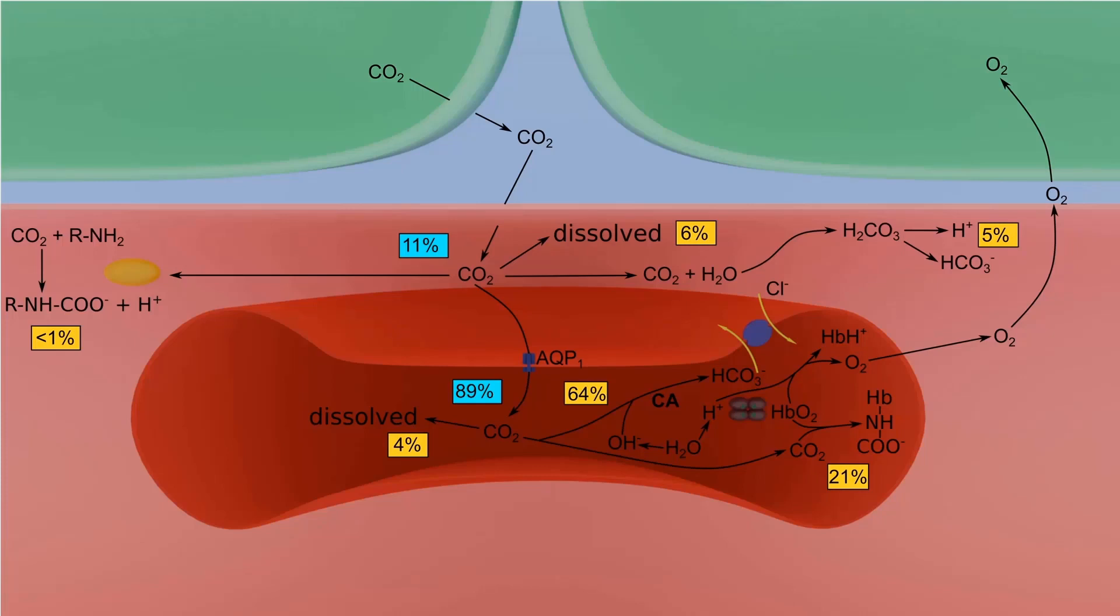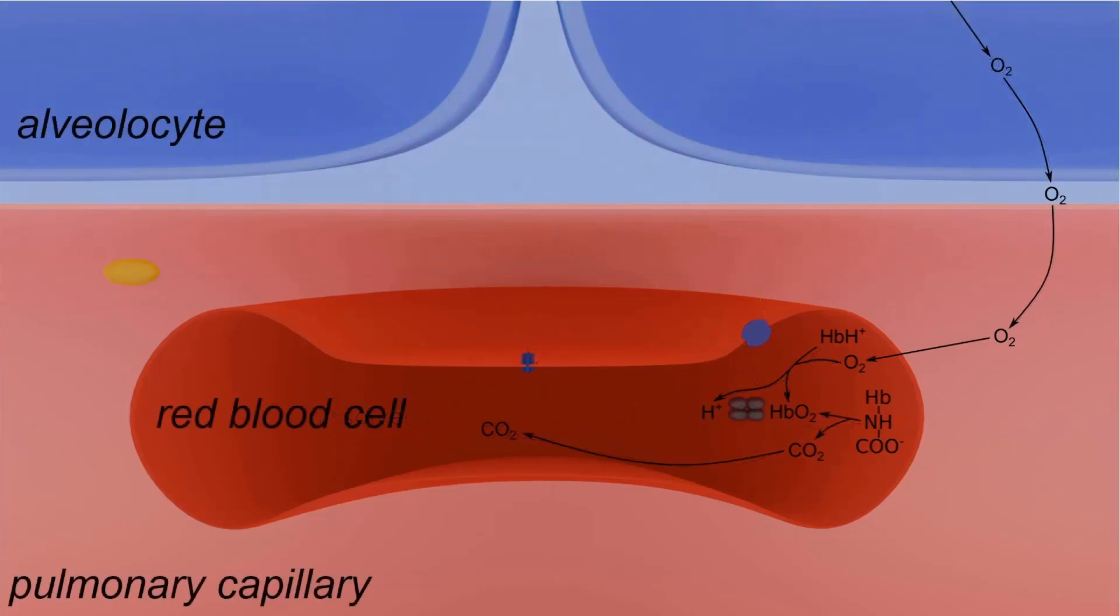Thus, the mean corpuscular volume of red blood cells in venous blood is slightly larger compared to arterial. In the pulmonary capillaries, all described processes are reversed. In the picture we can see alveolocytes, a capillary, and an erythrocyte.